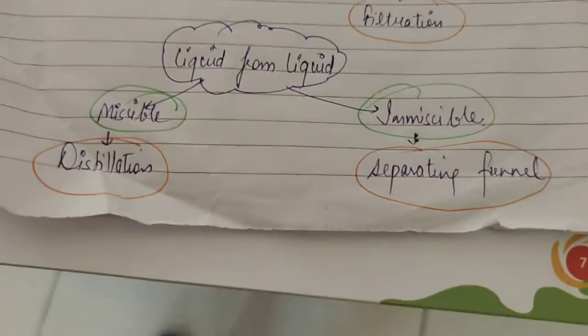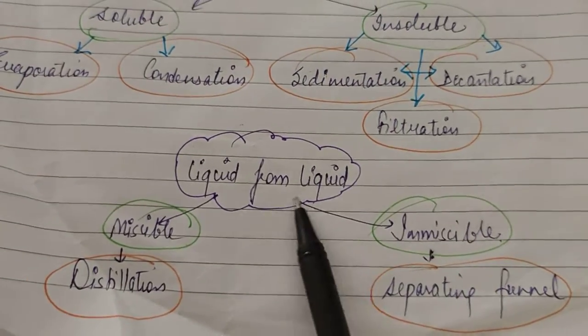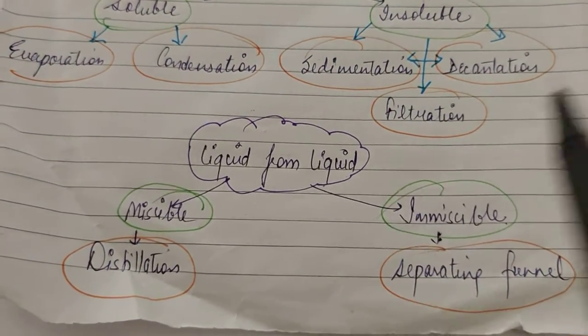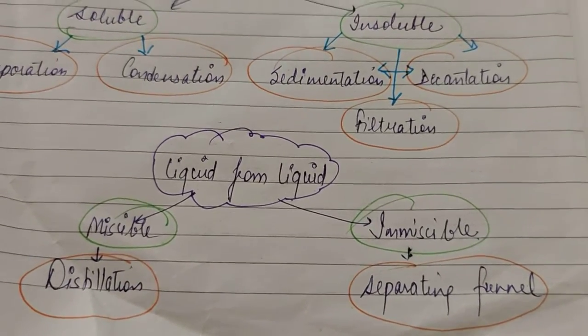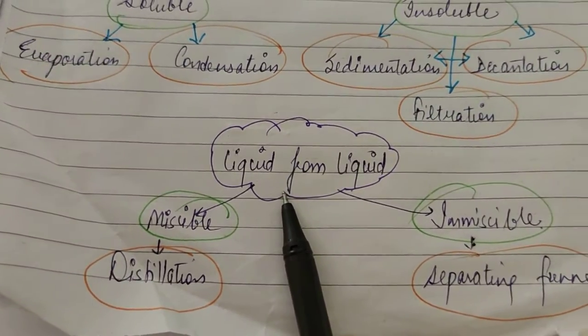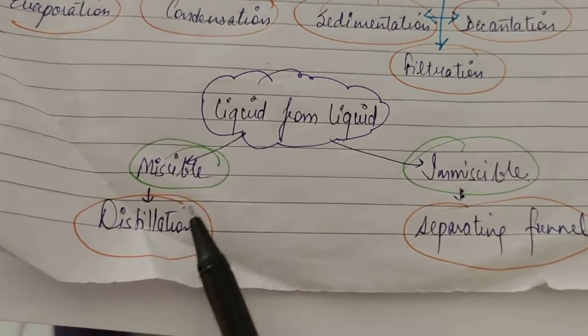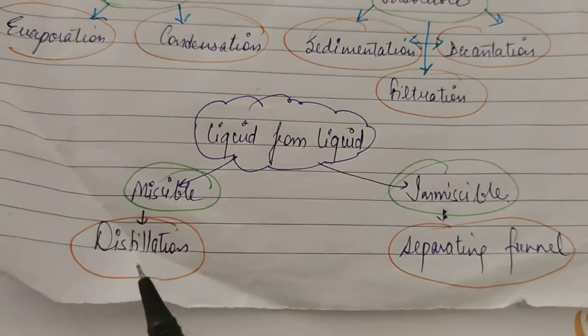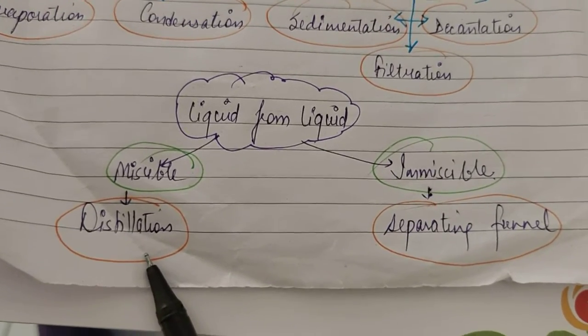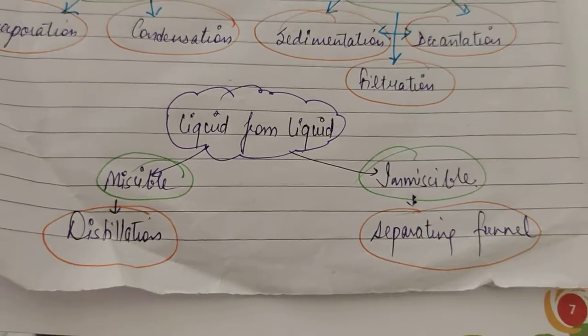Then we have another mixture like liquid and liquid. If you want to separate a liquid from another liquid, then it depends whether those two liquids got mixed in each other or not. If they are completely soluble in each other, then they are known as miscible liquids and they can be separated with the help of distillation. What is the basis of distillation? That is the difference in boiling point—that the two liquids to be separated will be having different boiling points.